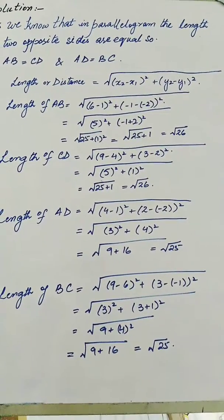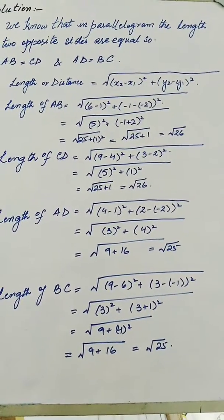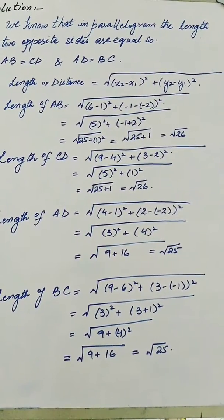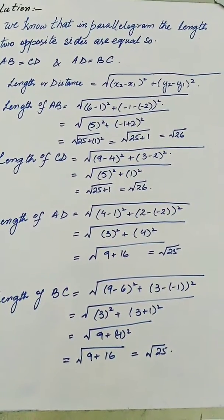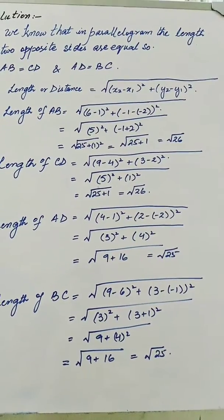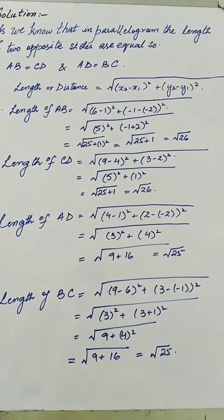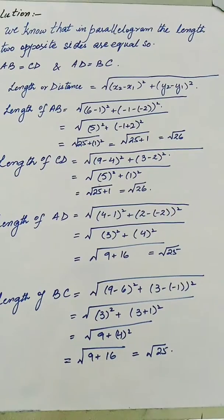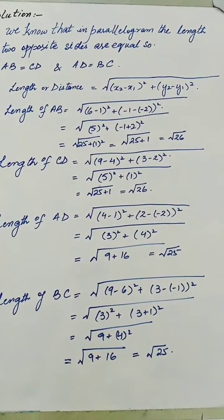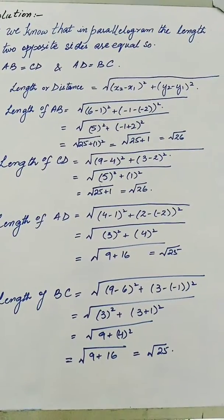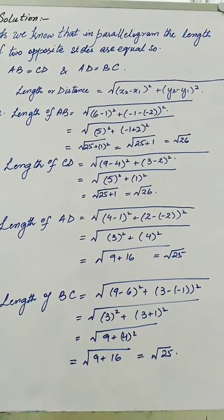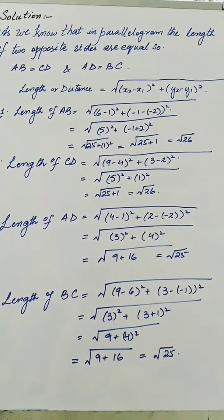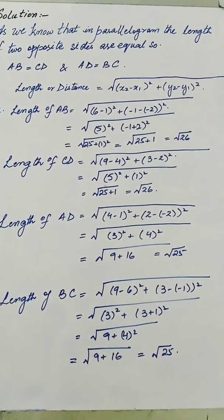The coordinates of A are (1, -2) and B are (6, -1). Putting these into the formula gives us root of (6 minus 1) whole square plus (-1 minus -2) whole square, which becomes root of 25 plus 1, giving root 26. Similarly, using the coordinates of C and D, the length CD also comes out as root 26. So it is proved that AB is equal to CD.